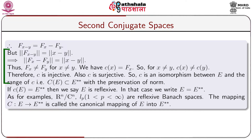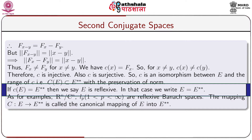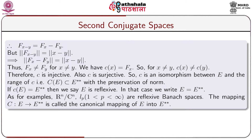So C is an isomorphism between E and the range of C, that is C(E) ⊆ E** with preservation of norm. If C(E) = E**, then we say that E is reflexive. In that case we write E = E**. As examples, the normed linear spaces ℝⁿ, ℂⁿ, and Lp where 1 < p < ∞ are reflexive Banach spaces.